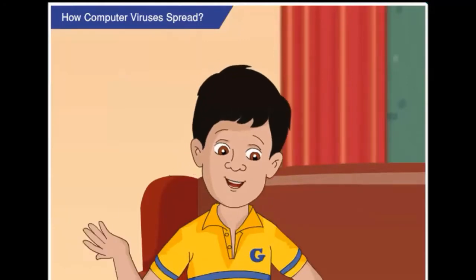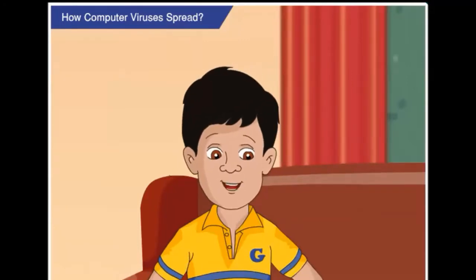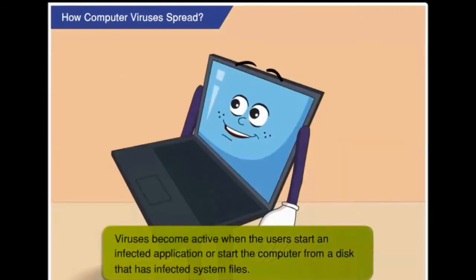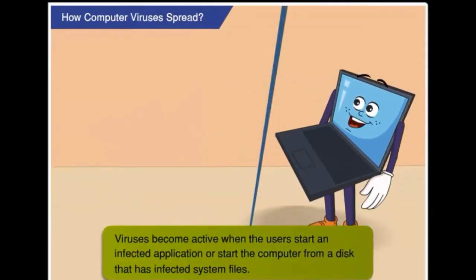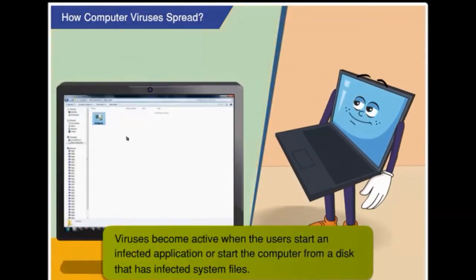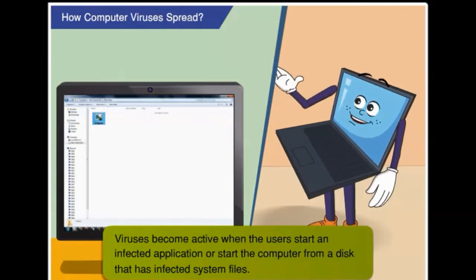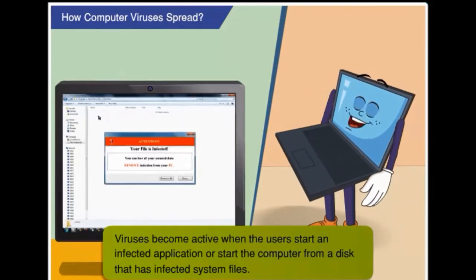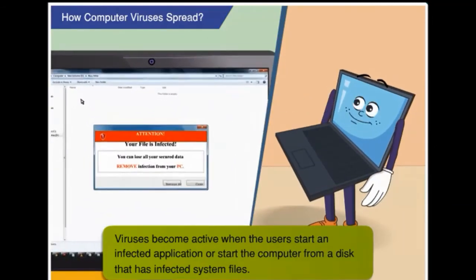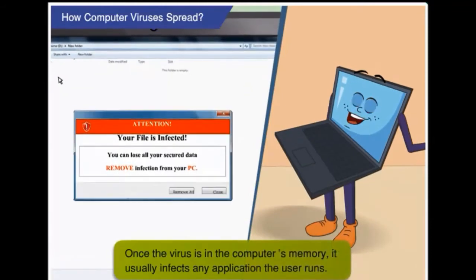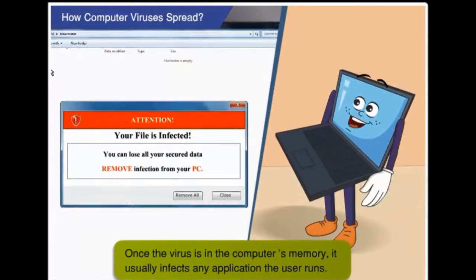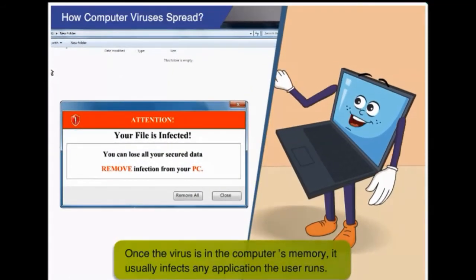But Toggle, how do these viruses start attacking the programs? Viruses become active as soon as you start an infected application or start your computer from a disk that has infected system files. Once the virus is in the computer's memory, it usually infects any application you run.